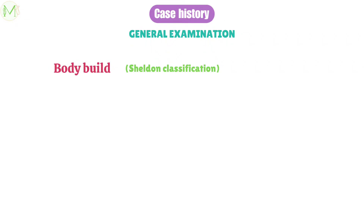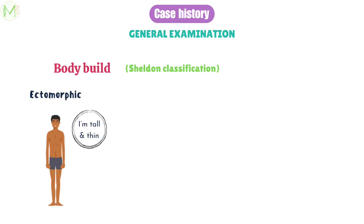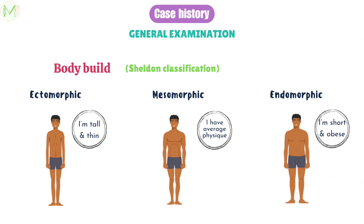Next, we need to assess the body build or physical status of a patient. Assessment of the physical build of the patient should begin as soon as the patient enters the clinic. Sheldon has classified body build into three types: ectomorphic, mesomorphic, and endomorphic. Ectomorphic people have tall and thin physiques, mesomorphic people have average physiques, and endomorphic people have short and obese physiques.